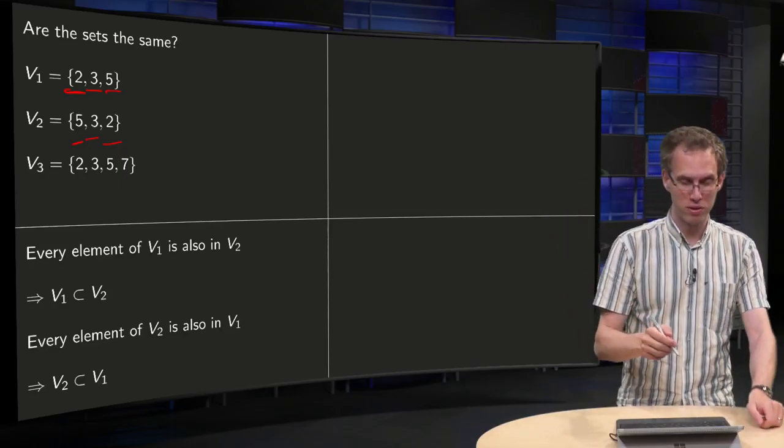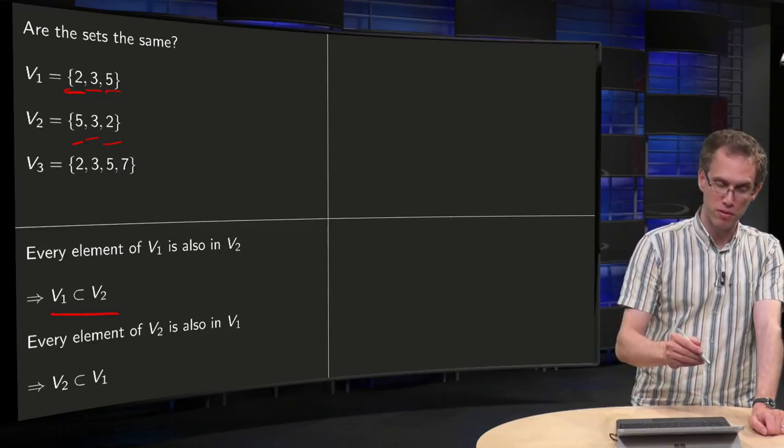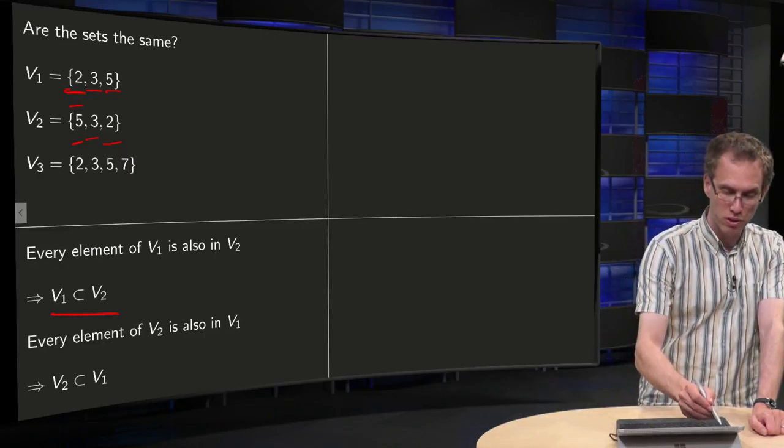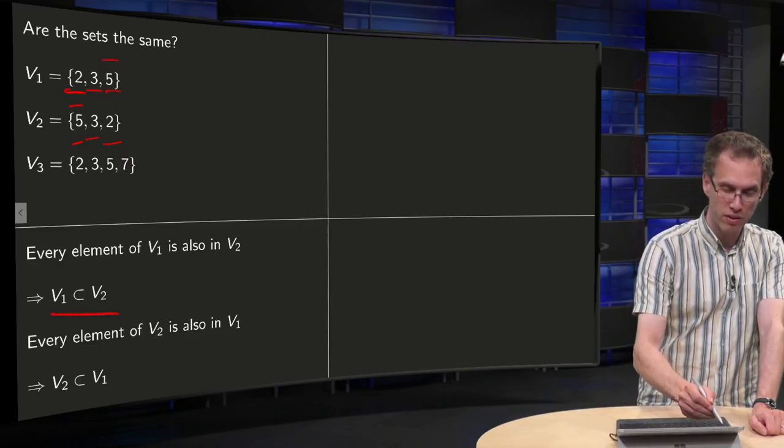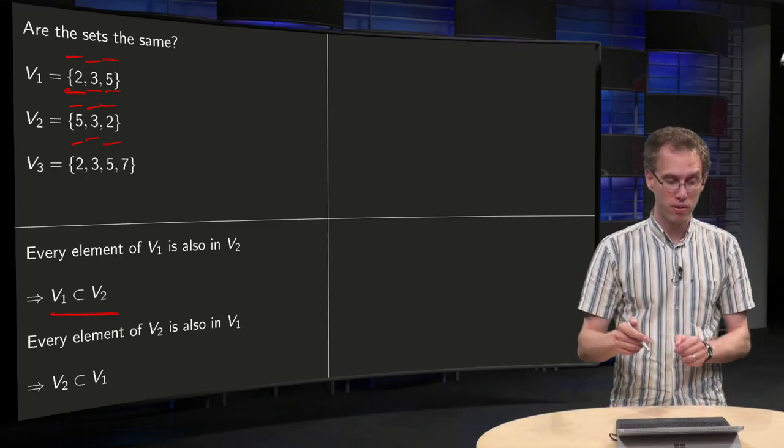Now we can also do the other way around. So we look at elements of V2: 5 is also in V1, 3 is also in V1, and 2 is also in V1. So every element of V2 is also in V1.